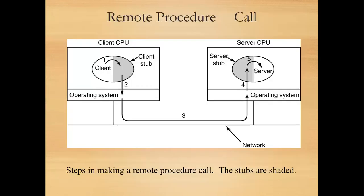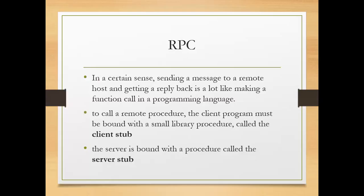The server stub calls the server procedure with the unmarshalled parameters. The reply traces back — now you have to send a message from the server to the client. When the reverse reply comes to the client, then the reverse procedure is applicable. This is the Remote Procedure Call. When you have to communicate with a remote host, i.e., if you have to communicate with the server, these are the steps we see in Remote Procedure Call.